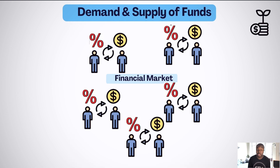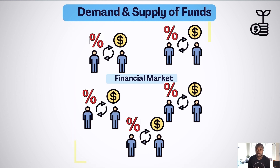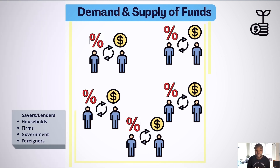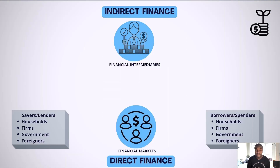If Ismo had reached out to one financial institution, say a bank, he might have gotten the total $5,000 for a relatively lower return, say 5%. The major players in the financial market include borrowers, lenders, and financial intermediaries.